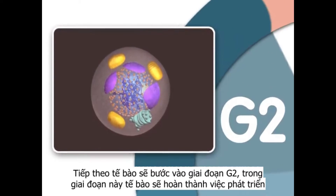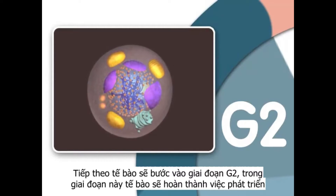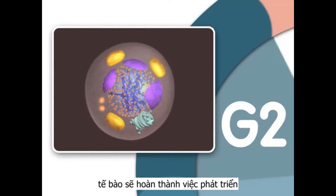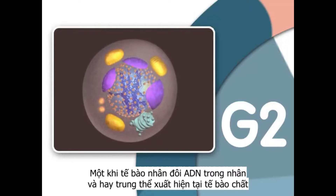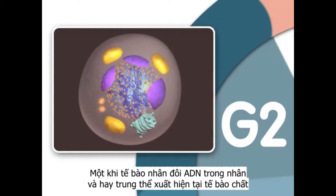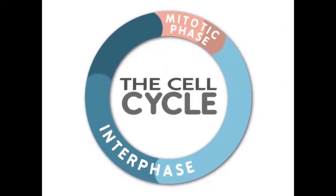The cell next enters another growth stage called G2, or gap 2. It is during G2 that the cell finishes growing. Once the cell has duplicated DNA in the nucleus and two centrosomes have appeared in the cytoplasm, mitosis can begin.